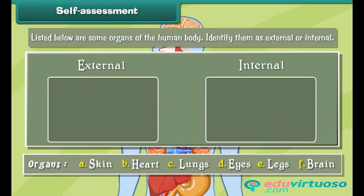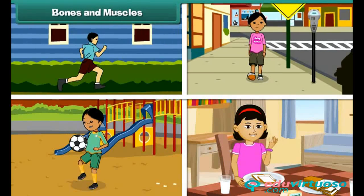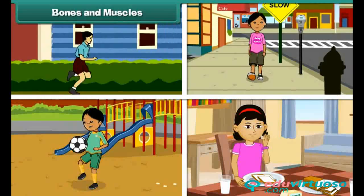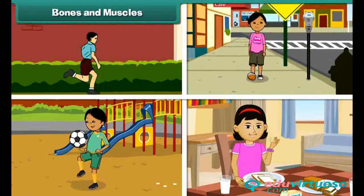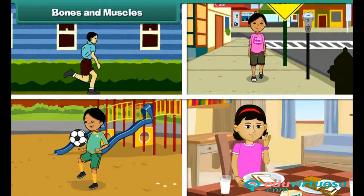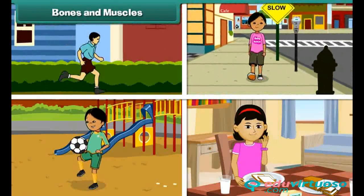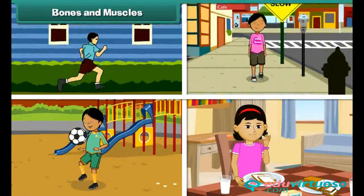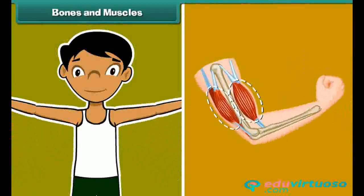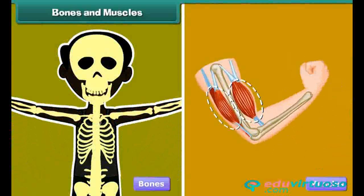It is time to check how well you have understood the difference between internal and external organs. Listed below are some organs of the human body — identify them as external or internal. Running, jumping, walking, moving, folding hands, and swinging legs are activities that involve movement of organs, all made possible by bones and muscles.